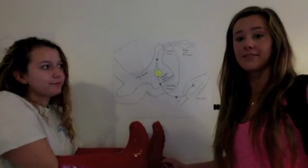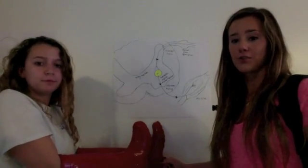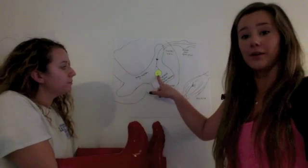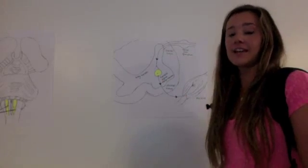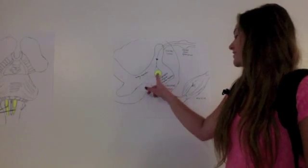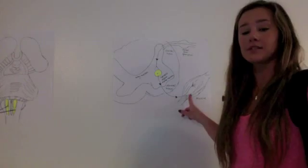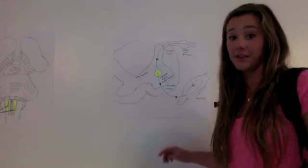Now, we're going to continue to descend through the lateral funiculus in the spinal cord. Now that we're moving down the spinal cord, the alpha motor neuron synapses on the ventral horn. The axons of these neurons pass through the ventral horn and innervate the muscles, so we can consciously move our limbs and fine motor muscles.